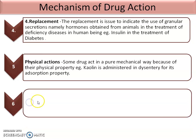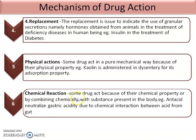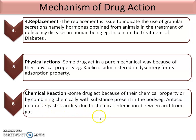Then there is chemical reaction. Some drugs act because of their chemical property, or by combining chemically with substances present in the body. By chemical interactions, some drugs give their result or action. Example: antacid neutralizes gastric acidity due to chemical interaction between the acid from the gut.